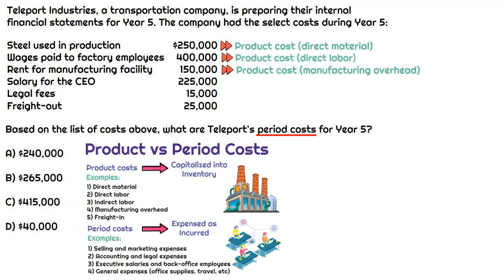How about salary for the CEO? The CEO is involved in running the business but not necessarily directly in making the product. In general, we can assume executive salaries, which includes the CEO, would be a period cost and expensed as incurred. So we've got our first period cost. Legal fees are always going to be period costs and expensed as incurred — just like accounting fees and other outsourced professional fees. That gives us our second period cost: legal fees for $15,000.